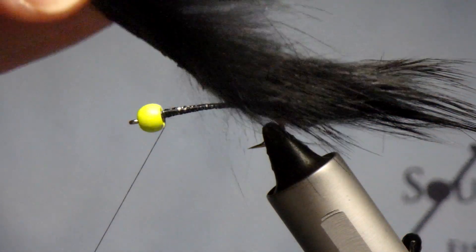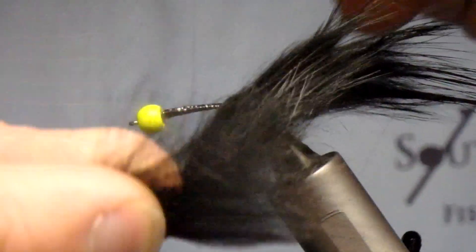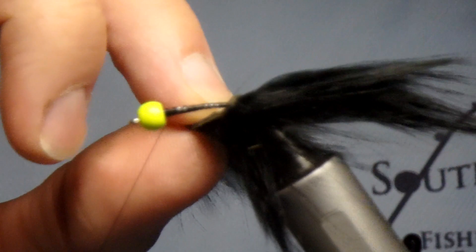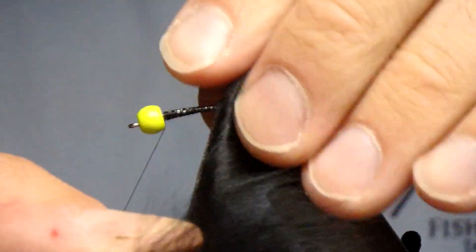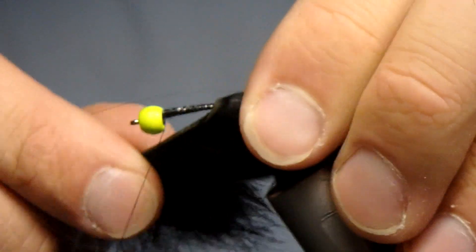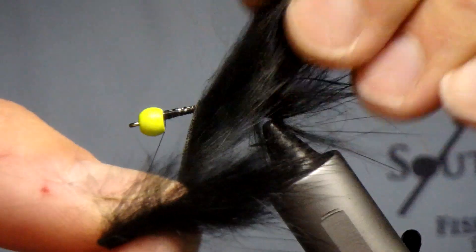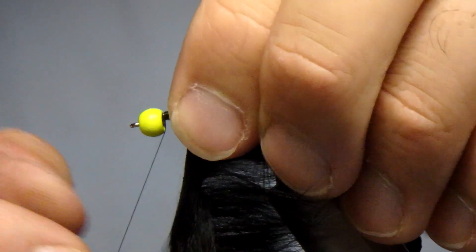Now you're going to take that zonker strip and start to palmer it forward making sure you're pulling your fibers back and out as you go. You can use a dubbing brush to make sure you get it all back but a nice even wrap towards the front.